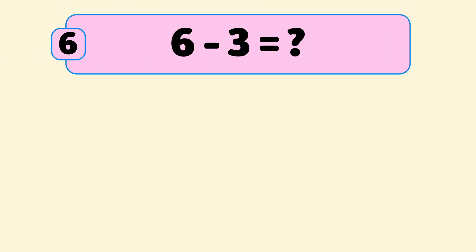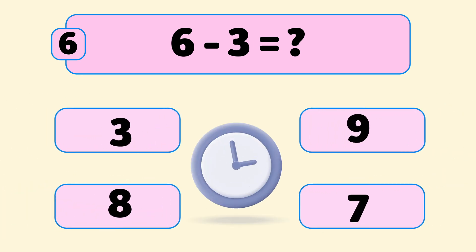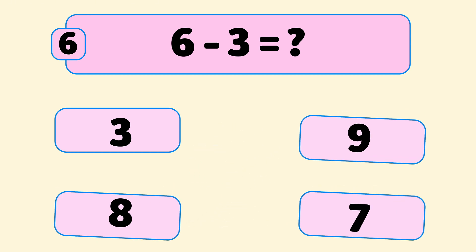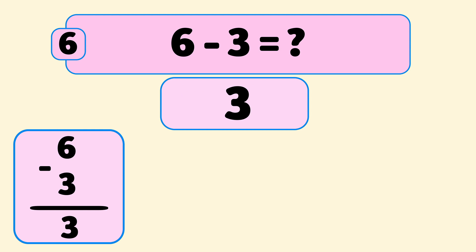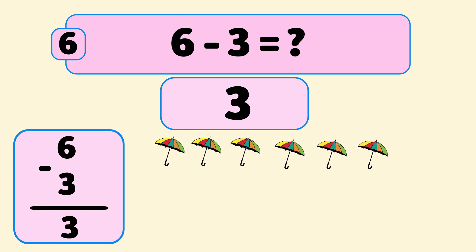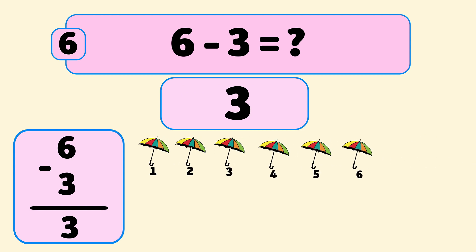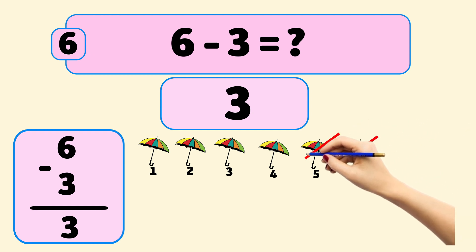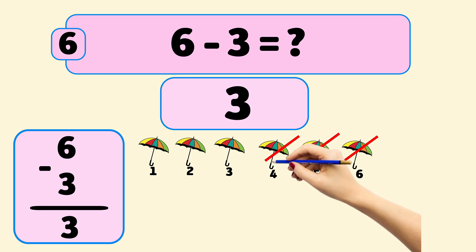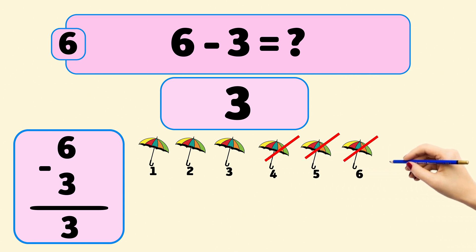What is 6 minus 3? The answer is 3. We start with 6 umbrellas and remove them one by one: 6, 5, 4. Now we have 3 umbrellas left.